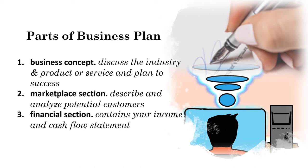There are three primary parts of a business plan. We have the business concept, the market section, and the financial section. The business concept is where you discuss the industry. It includes the business structure, the particulars of the products or service, and how you plan to make your business a success.